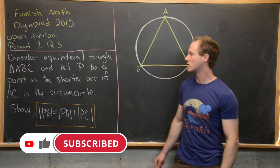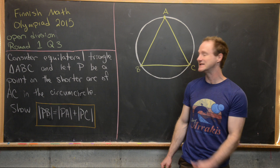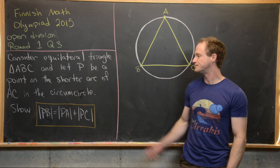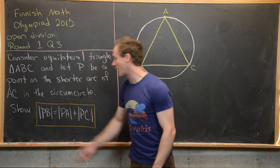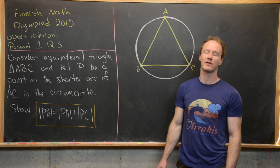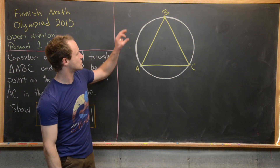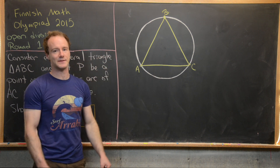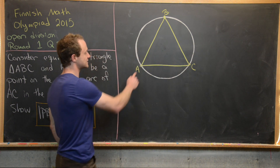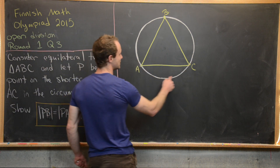Let's consider equilateral triangle ABC and let P be a point on the shorter arc of AC, which is part of the circumcircle of that equilateral triangle ABC. The goal is to show that the length of line segment PB is equal to the length of line segment PA plus the length of line segment PC. P is on the short arc of AC.